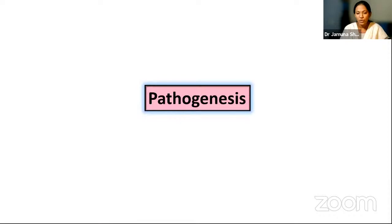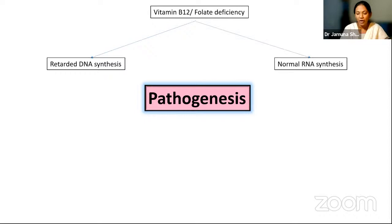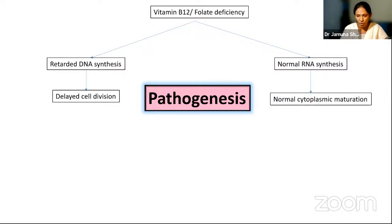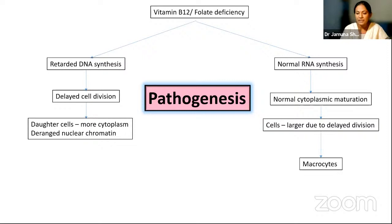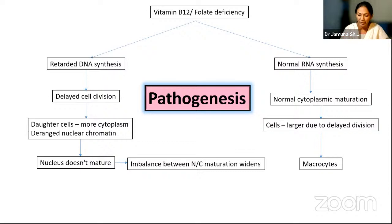In the pathogenesis of megaloblastic anemia, the person can have either B12 or folate or both deficiencies, leading to retarded DNA synthesis. However, RNA synthesis is perfectly normal. Because of retarded DNA synthesis, there is a delay in cell division, while cytoplasmic maturation is normal. Because of delayed cell division, the daughter cells will have more cytoplasm and deranged nuclear chromatin. The cells are all large because of this delay, and these large cells are called macrocytes. The nucleus doesn't mature, and the imbalance between nuclear and cytoplasmic maturation widens over time, causing more macrocytes.